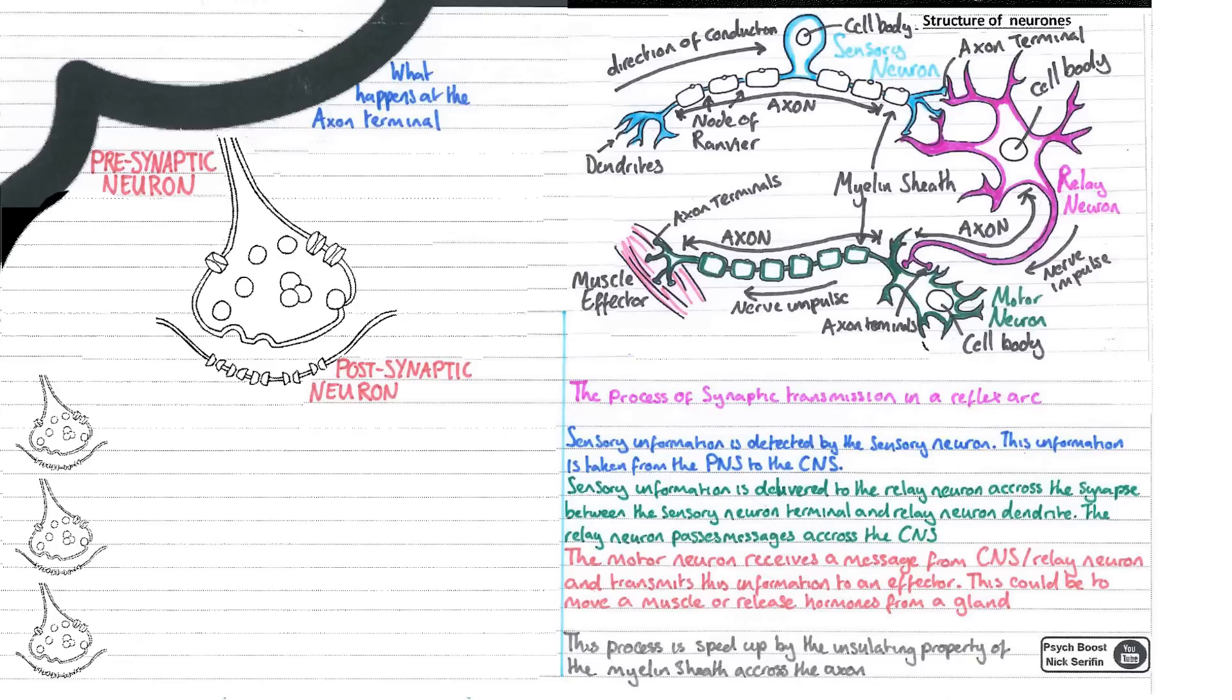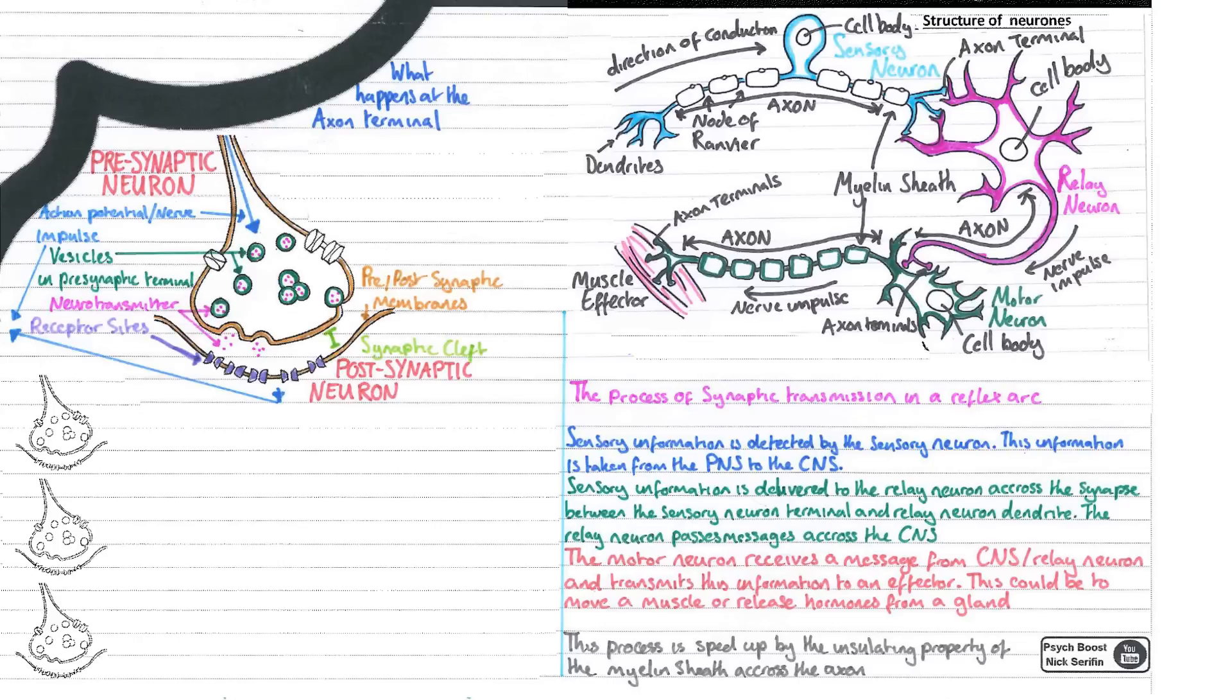We have a pre-synaptic neuron - this is where the information is coming from. We have a post-synaptic neuron - this is the neuron that needs to be communicated with. Clearly this post-synaptic neuron is waiting for a message and then to pass it on from that.